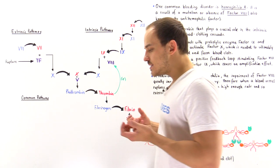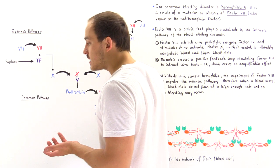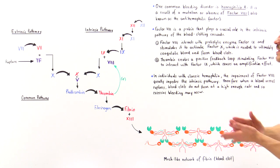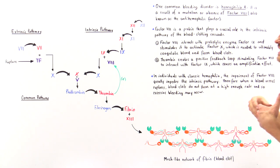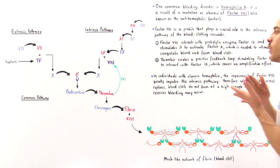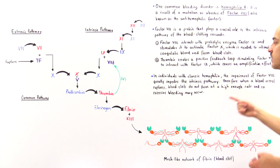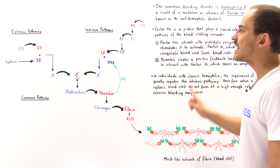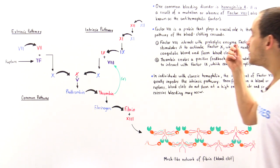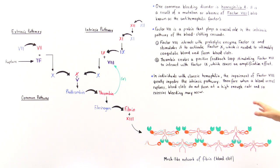In individuals with classic hemophilia A, there is a mutation in factor VIII, or in some cases factor VIII is missing entirely. The impairment of factor VIII greatly impedes the intrinsic pathway, meaning blood clots cannot be created quickly enough. Once the endothelium ruptures, blood clots do not form at a high enough rate, and so excessive bleeding occurs — which is exactly why hemophilia A is classified as a bleeding disorder.